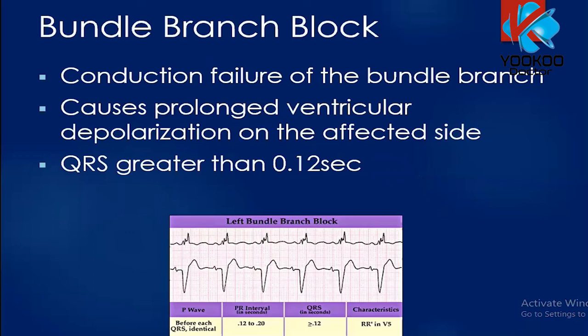Bundle branch block occurs when conduction failure happens in the bundle branch, causing prolonged ventricular depolarization on the affected side. The QRS is wide — greater than 0.12 seconds. Bundle branch block can be classified as left or right bundle branch block, and further as left anterior fascicular block or left posterior fascicular block. In this basic ECG interpretation, we focus on whether a bundle branch block is present or not.